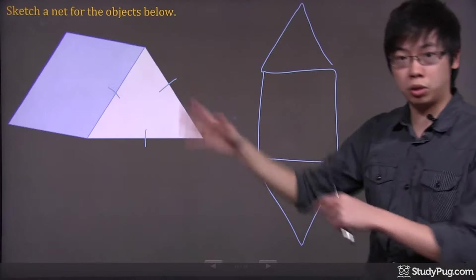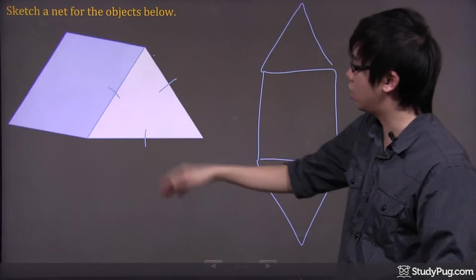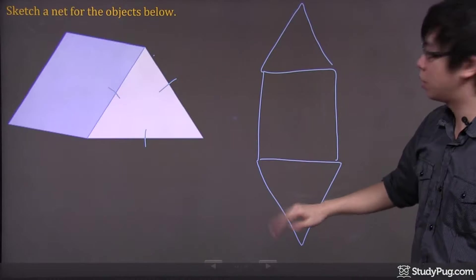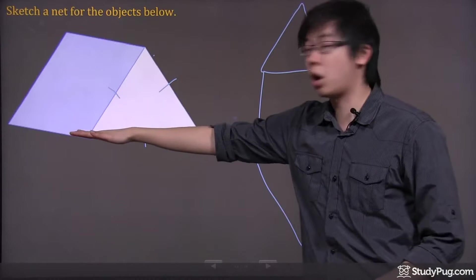So basically if I unwrap this open, basically I fold this one down, I fold one on the back down, I get the one on the top, one on the bottom. And this piece is the bottom layer.